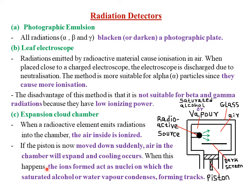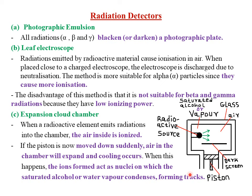When this happens, the ions formed act as nuclei on which the saturated alcohol or water vapor condenses, forming tracks. We are going to have tracks of different shapes depending on the type of radiation that led to the formation of those particular tracks.